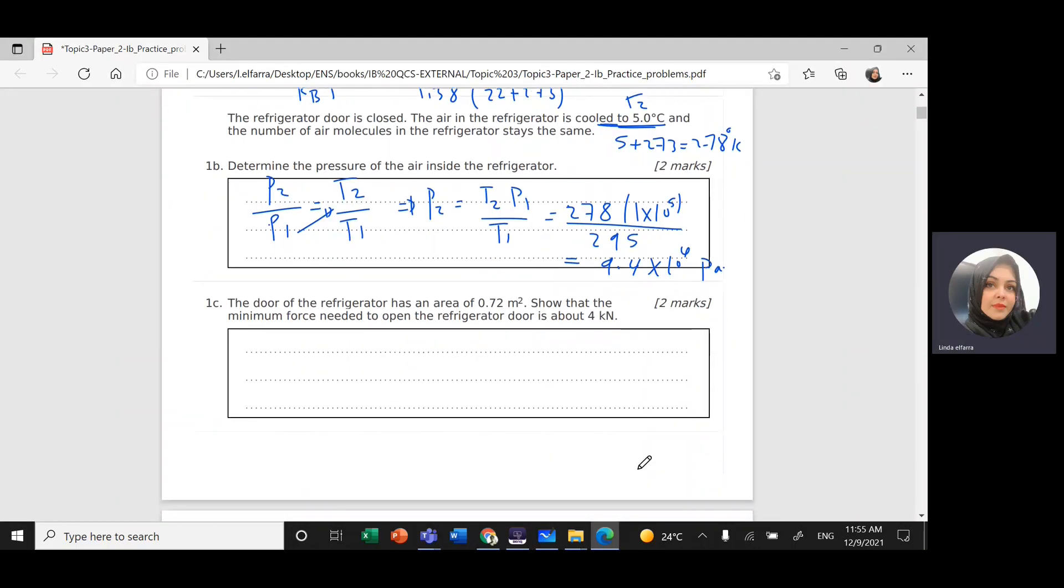Part C: The door of the refrigerator has an area of 0.72 meter squared. Show that the minimum force needed to open the refrigerator door is about 4 kilonewtons. The change in pressure equals force over area, so I need to find F.